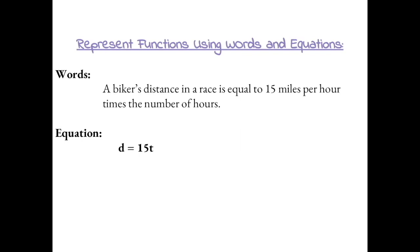Words: a biker's distance in a race is equal to 15 miles per hour times the number of hours. We can write this as an equation, d equals 15 times t, where t represents the time in hours.